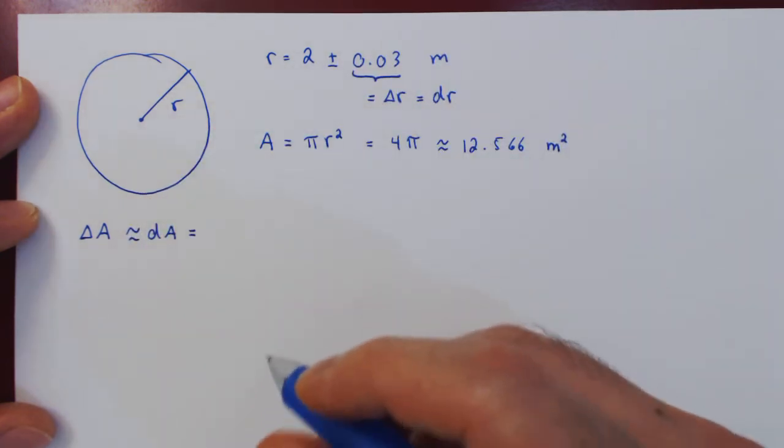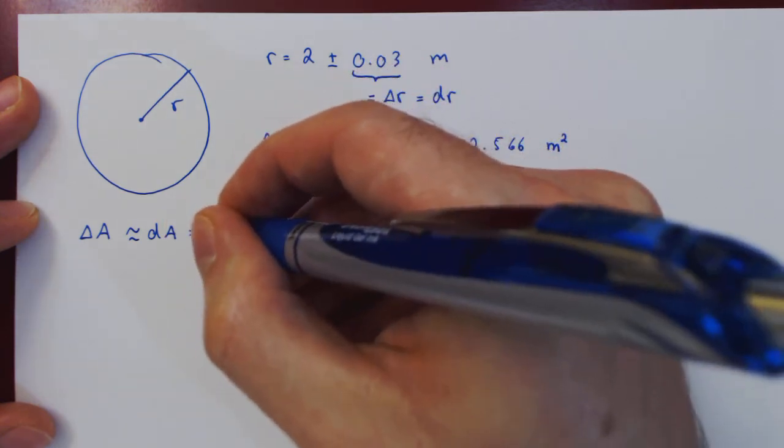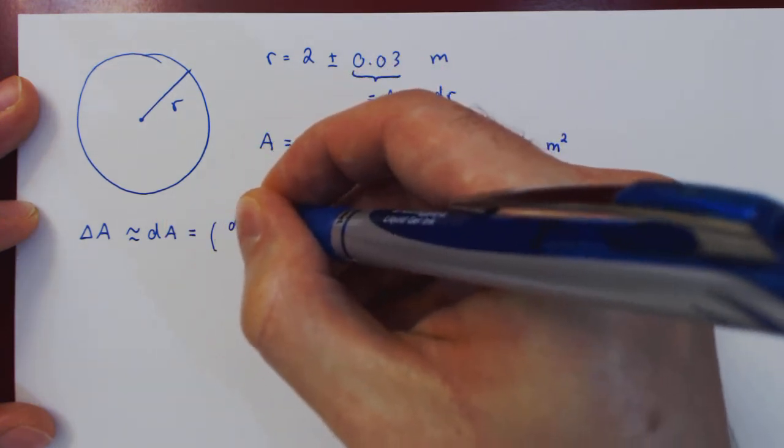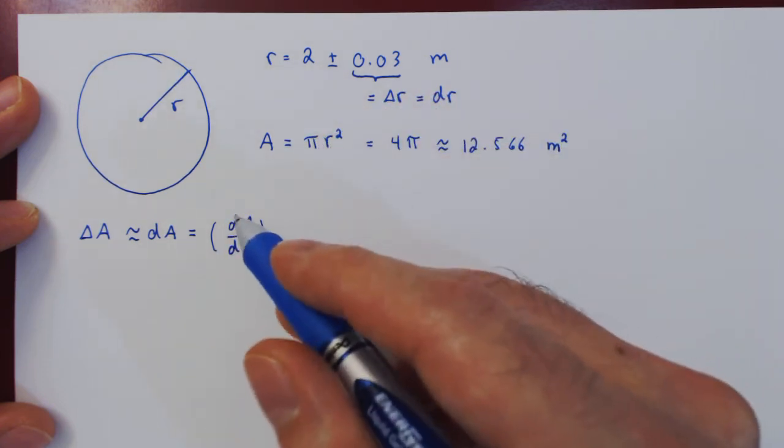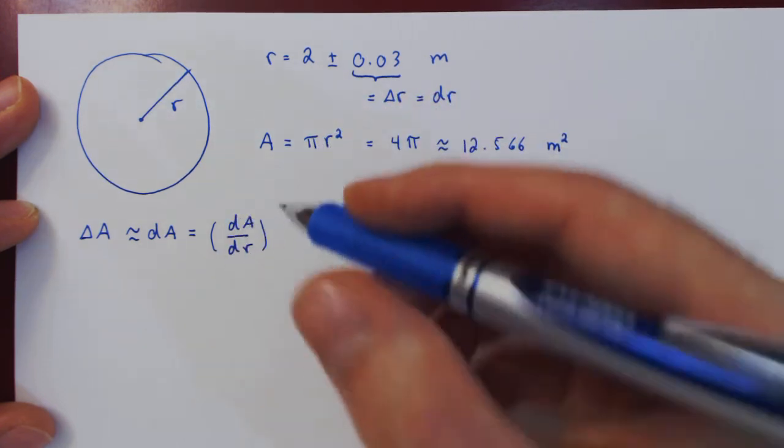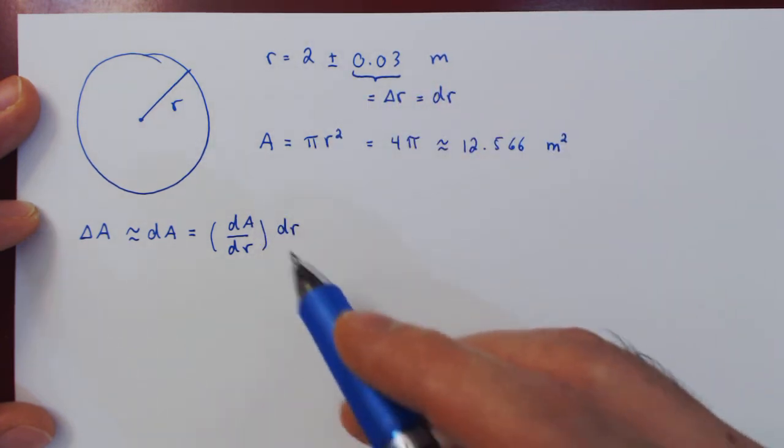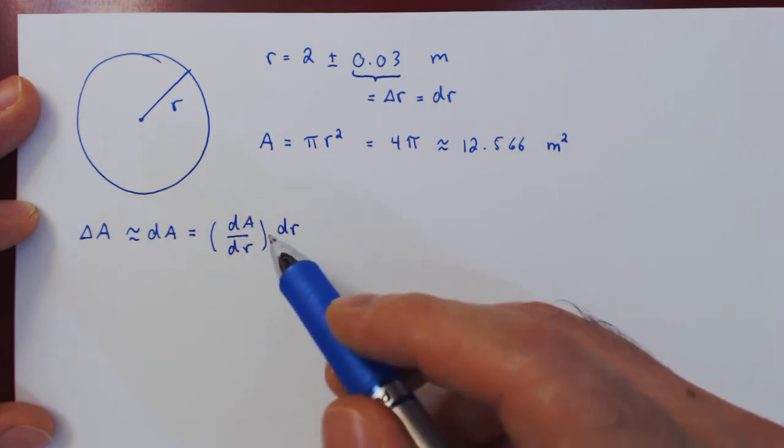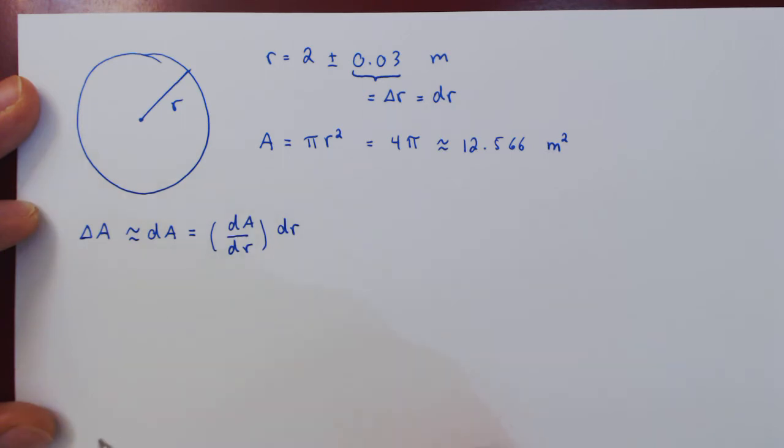The differential of a function, where A is a function of r, is given by the slope of the function with respect to its independent variable. So the derivative of A with respect to r, times the change in the independent variable, the change in r. It's clear that dr and dr cancel, and we get dA.